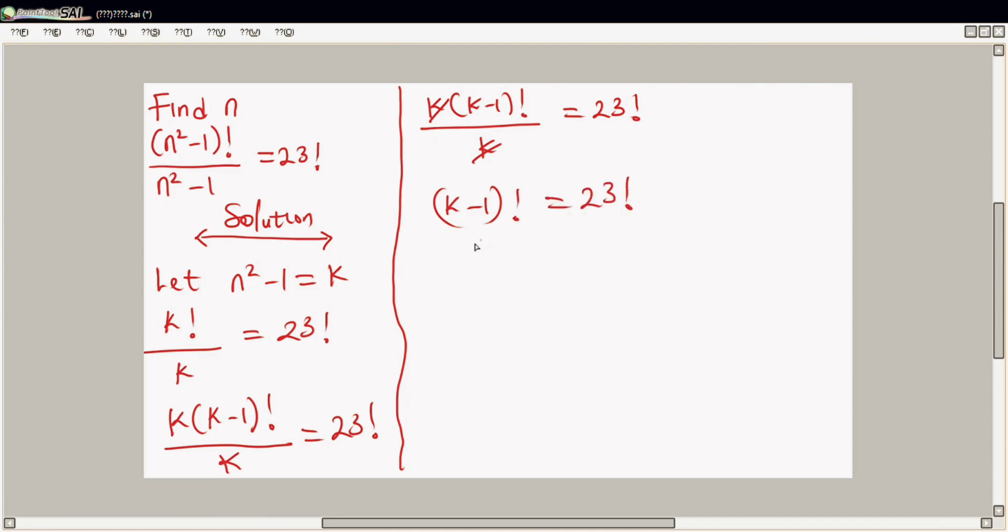So far it is equality, then it's implied that k minus one is equal to 23, right? Then k equal to 23 plus 1, so k equal to 24. But what is our k? Our k is n² minus one.